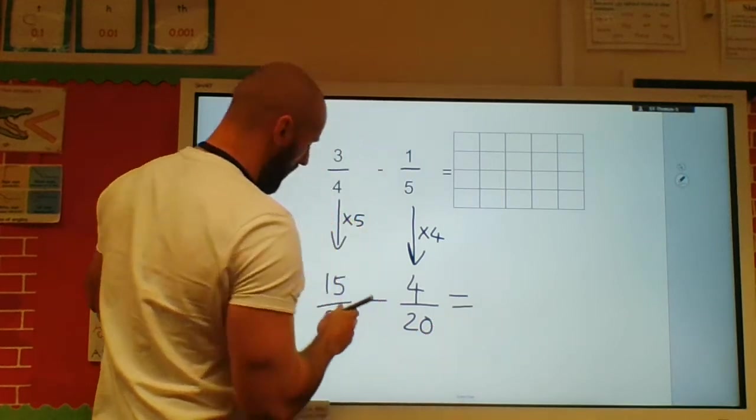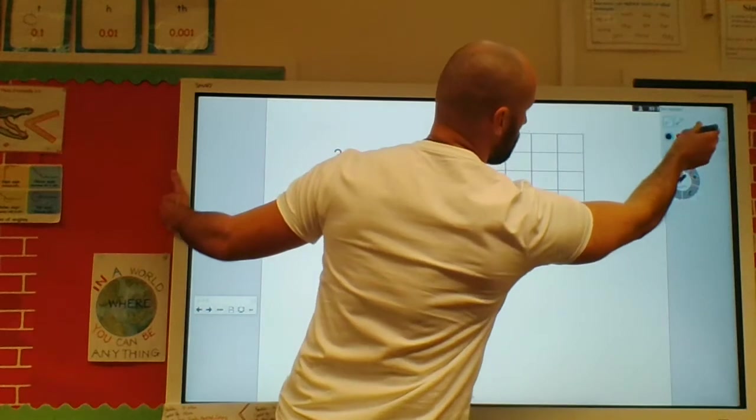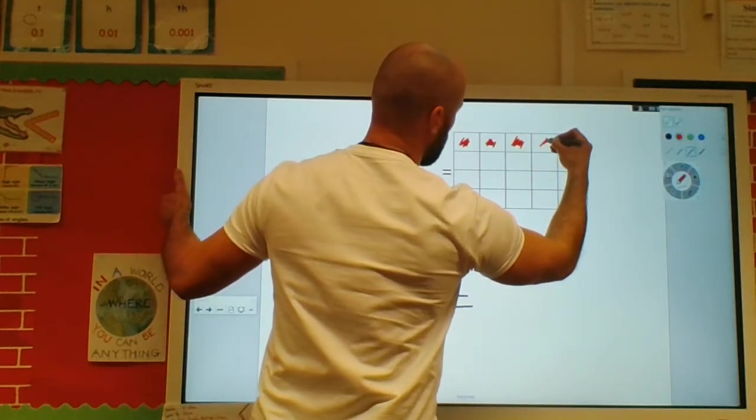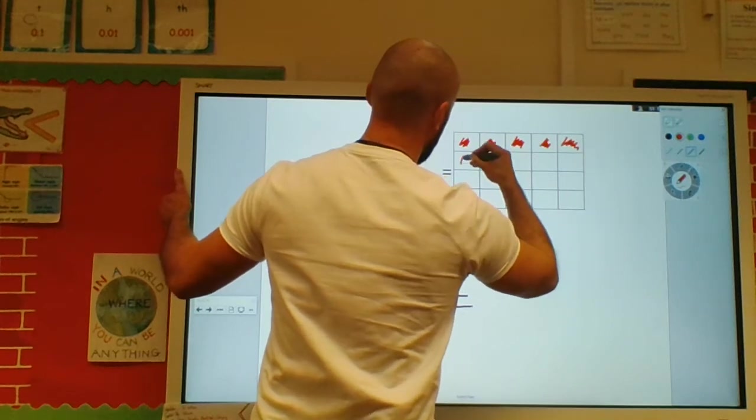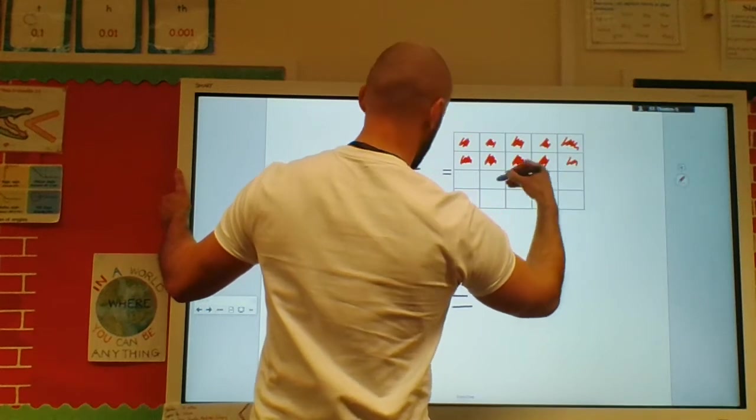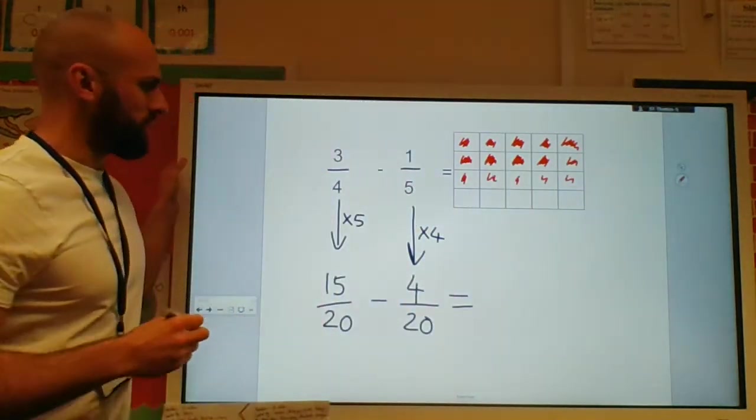So now I have fifteen-twentieths. So let's shade those fifteen parts in. Let's use a different colour. One, two, three, four, five, six, seven, eight, nine, ten. Okay, so I've got my fifteen-twentieths there.